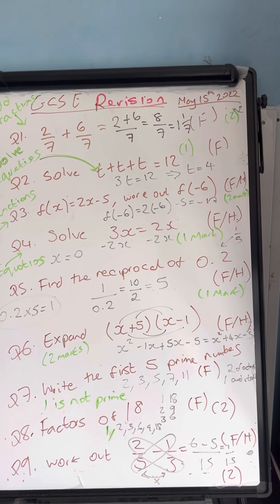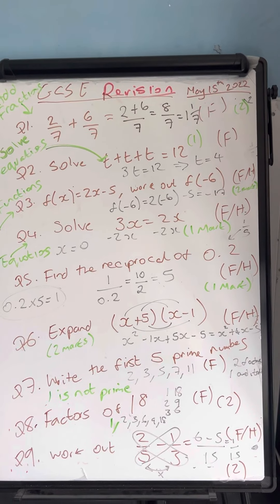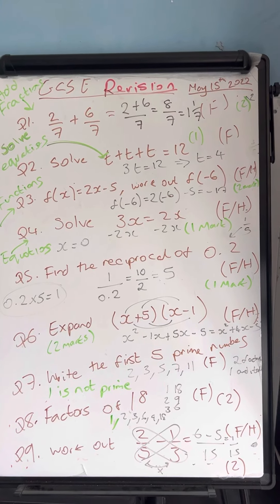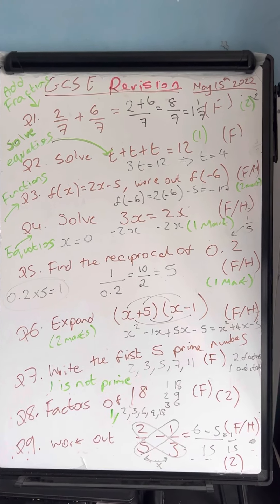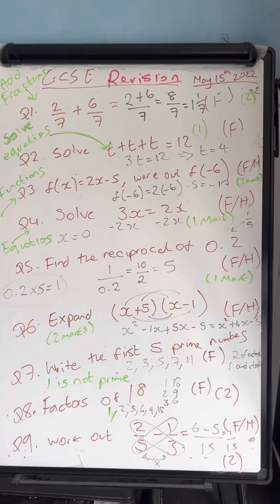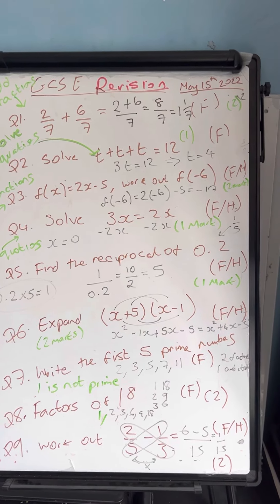This is question number eight. Factors of 18. Factors are numbers that go into it: 1 and 18, 2 and 9, 3 and 6. I'd write it as a list: 1, 2, 3, 6, 9, 18. These are all your factors of 18.